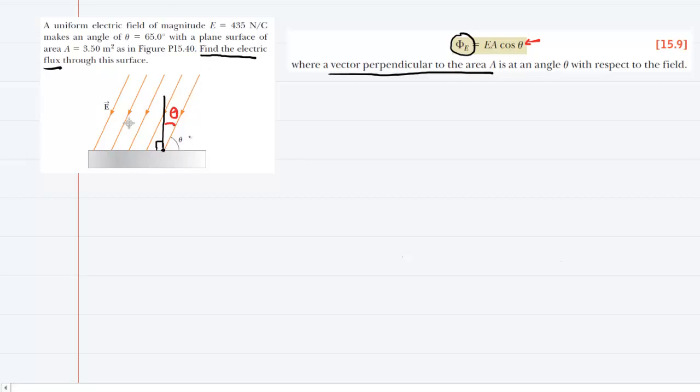The angle they gave us was actually between the electric field and the surface. That's not the correct angle. It was given as 65 degrees in the question. To find the proper angle, we simply subtract 65 degrees from 90, because this angle from here all the way down to there is a 90 degree angle. So to get the red-colored angle, we subtract 65 from 90, and we get 25 degrees.